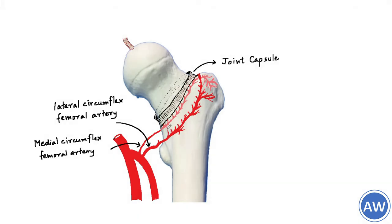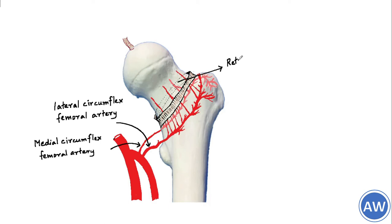This arterial arcade is outside the joint capsule, that is, it is extracapsular. Several retinacular arteries appear from this arcade and travel along with the retinacular fibers of the joint capsule. These arteries enter the joint cavity and become intracapsular.